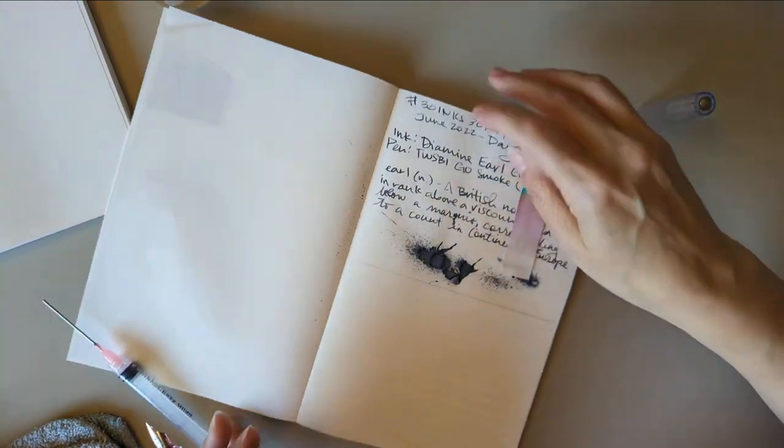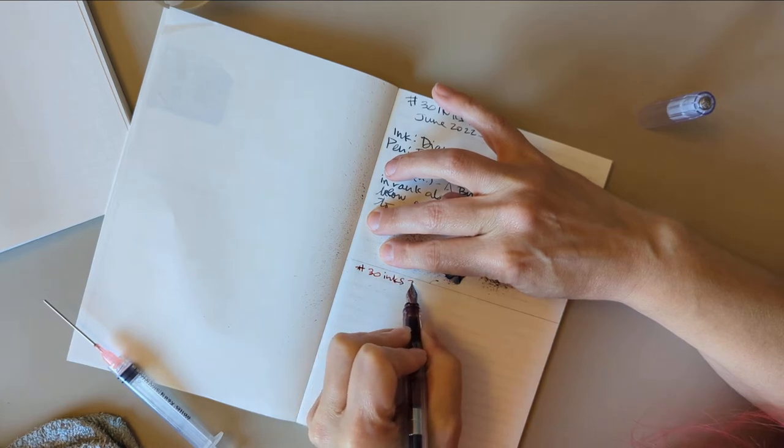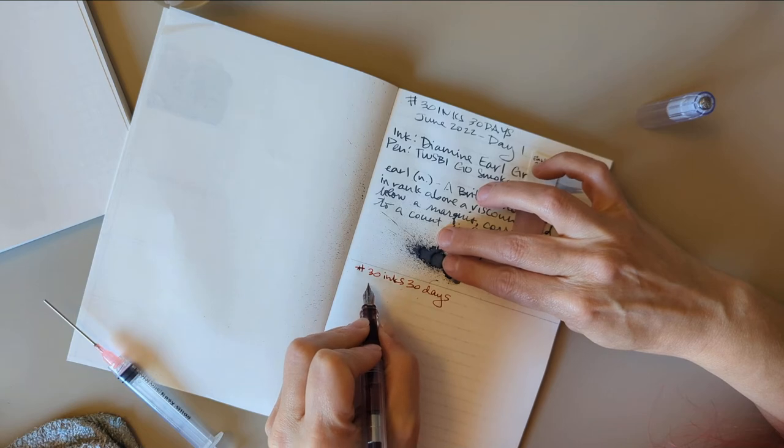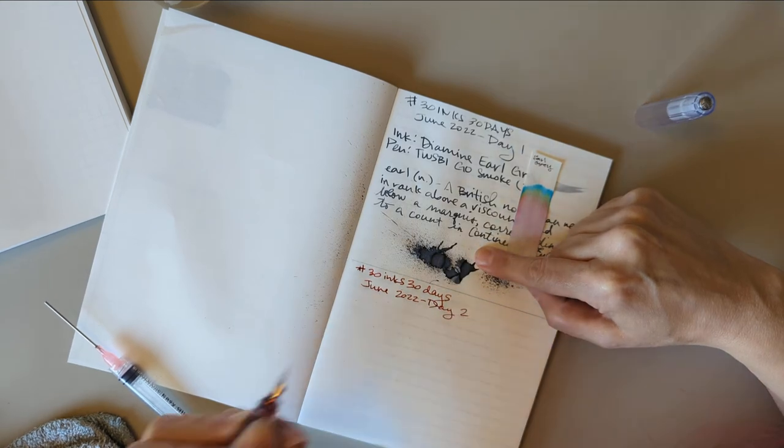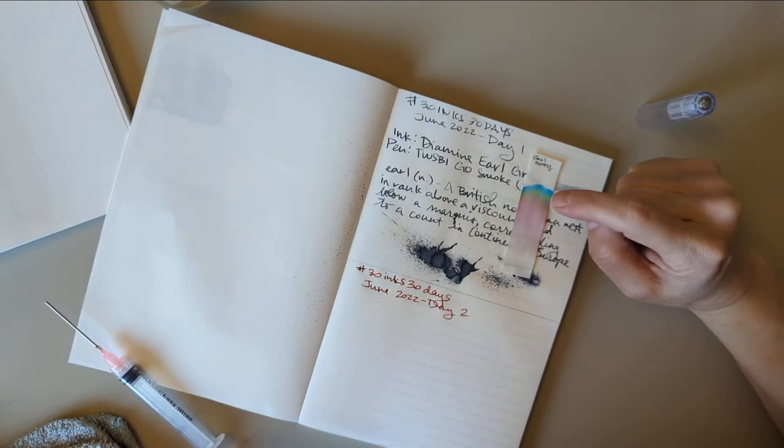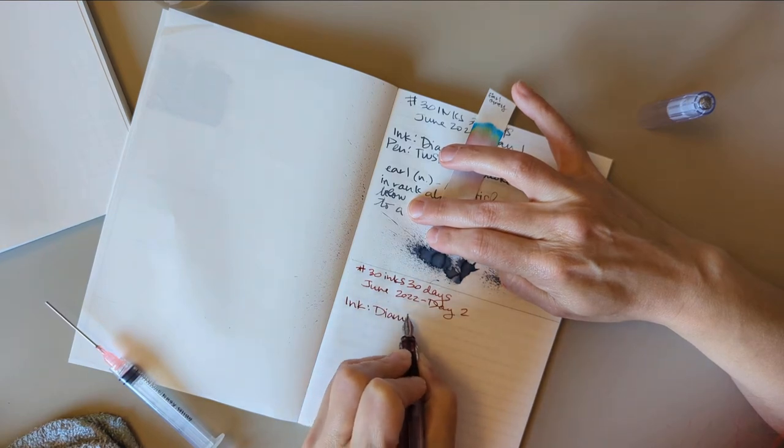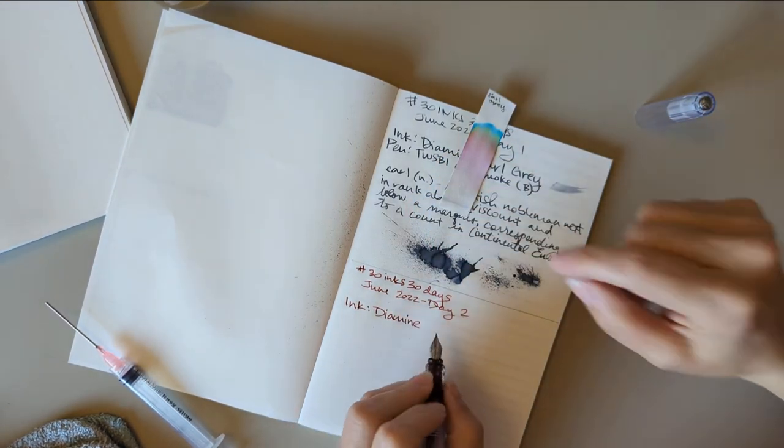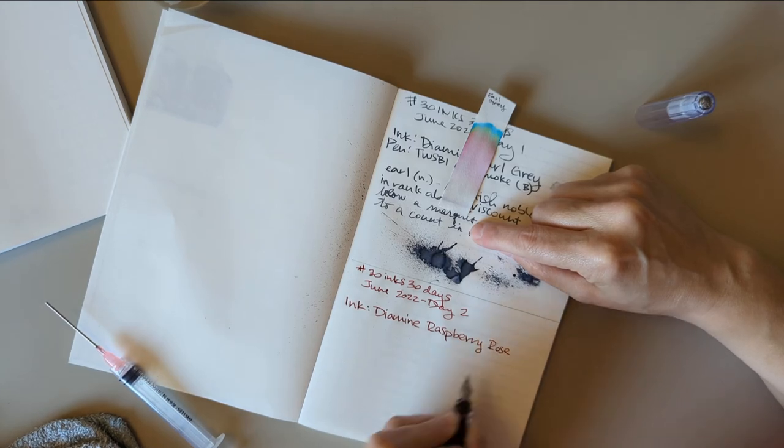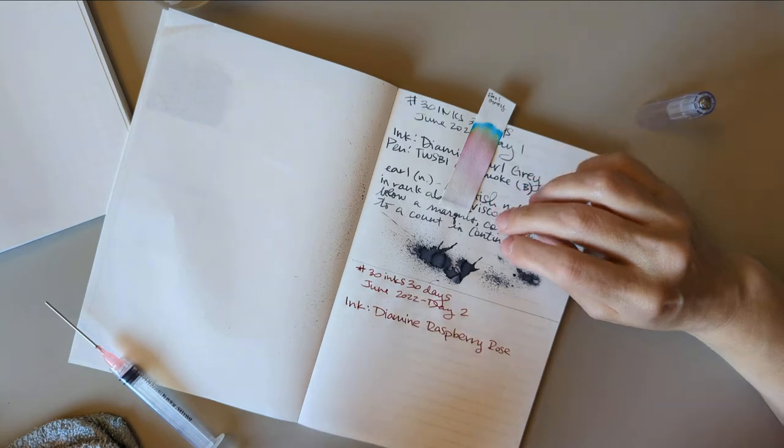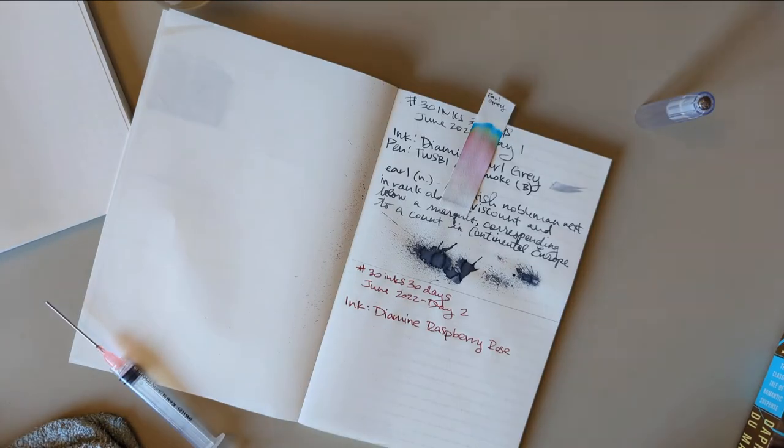So what do we do? We have our pen. I was gonna say I lost the cap - the cap is literally right here. We write again: hashtag 30 inks 30 days June 2022 day two. I don't remember if I've used this in a pen. Another Diamine, I suppose it's the one I have the most of because of Inkvent. I really wanted this to be Raspberry Rosé but it's just Raspberry Rose. So for the words I thought I would take a line from Rebecca.